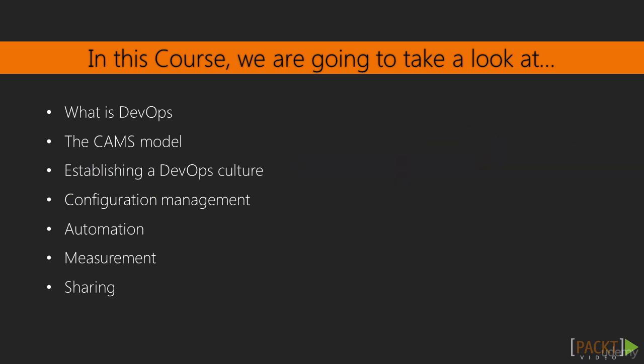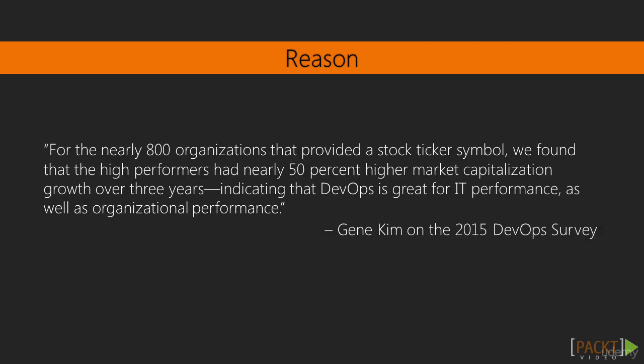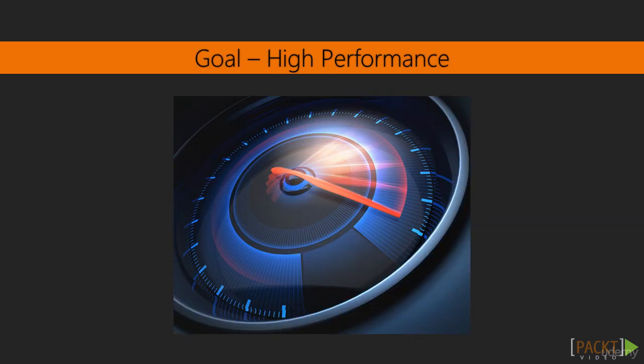In the last part of the course, we'll have some next steps where we talk about more advanced topics in DevOps and places you can find resources to explore different areas. Gene Kim and others do a survey every year, and in the 2015 DevOps survey, they discovered that for nearly 800 organizations that provided a stock ticker symbol, the high performers had nearly 50% higher market capitalization growth over three years.